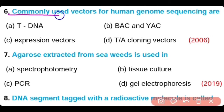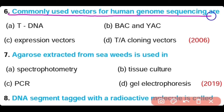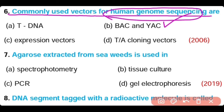Question 6: Commonly used vectors for human genome sequencing are — T-DNA, BAC and YAC, expression vector, T/A cloning vector. Option B is correct. Bacterial artificial chromosome (BAC) and yeast artificial chromosome (YAC) are the two vectors used for human genome sequencing.